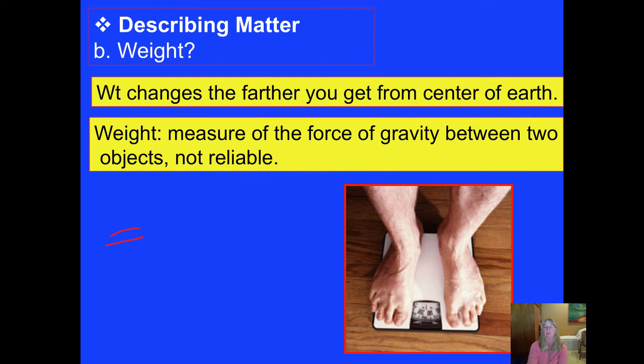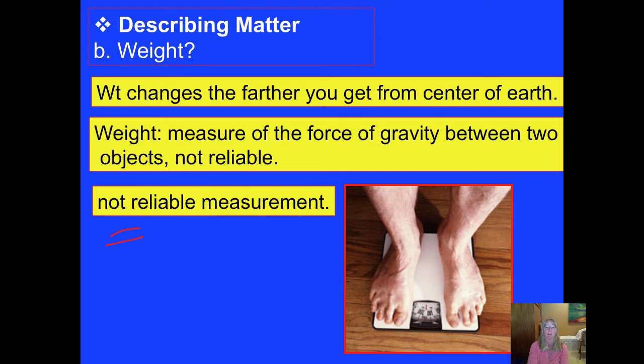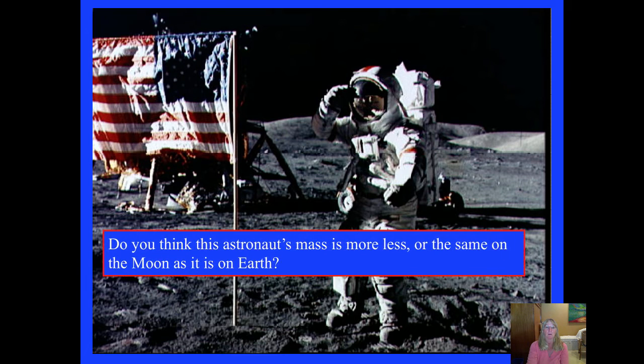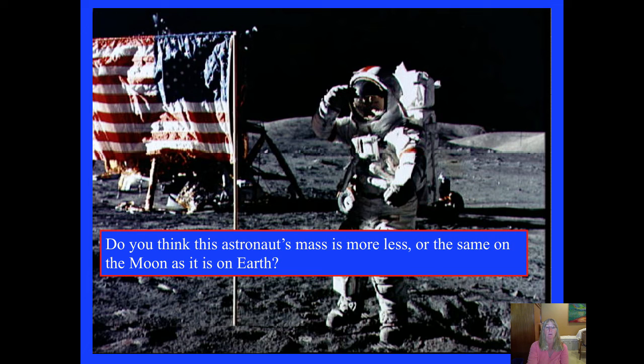And when you step on a bathroom scale, you're taking your weight. It's a measure of that force of gravity that's pulling you towards the center of the Earth. Well, weight is not a reliable measurement in that it will change the farther away you get from some planetary body. So if you're on the moon, I hope that you have deduced that that astronaut's mass is going to be the same on the moon as it is on Earth. However, his weight is going to be much less. In fact, six times less because the moon has six times less mass than the Earth does. If you were a 120-pound person on Earth, on the moon you'd weigh about 20 pounds.